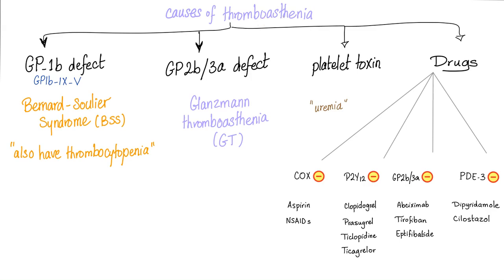What are the causes of thrombocytopathy? Problem with GP1B such as Bernard-Soulier; problem with GP2B3A such as Glanzmann's; problem with platelet toxins such as uremia; drugs such as aspirin and non-steroidals, which are cyclooxygenase inhibitors, specifically COX-1; clopidogrel, prasugrel, ticlopidine, ticagrelor — the P2Y12 inhibitors; abciximab, tirofiban, eptifibatide, orbofiban — the GP2B3A inhibitors; and dipyridamole and cilostazol, which are phosphodiesterase inhibitors.